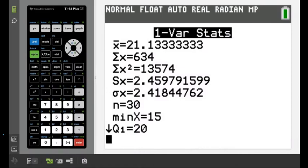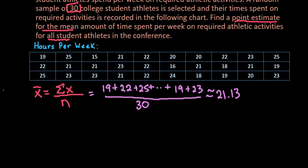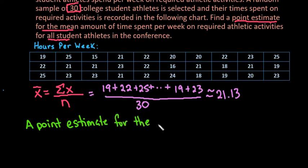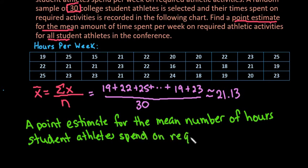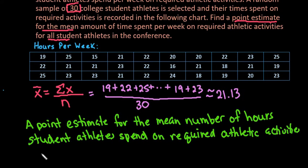Then you would write a sentence: a point estimate for the mean number of hours student athletes spend on required athletic activities is approximately 21.13 hours per week.